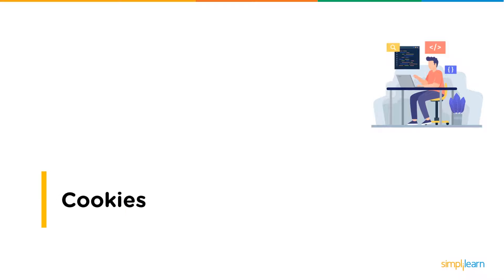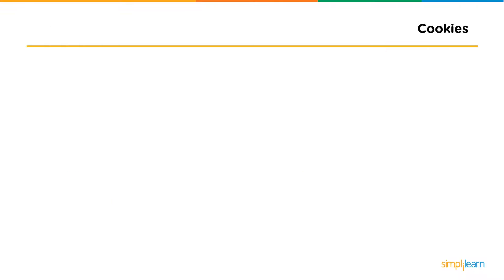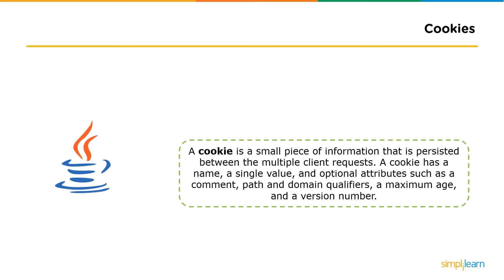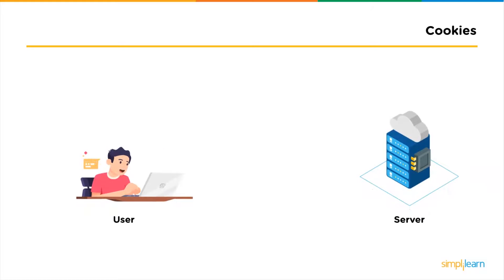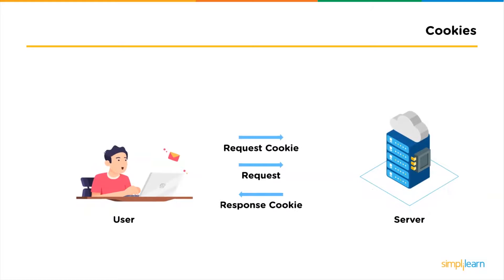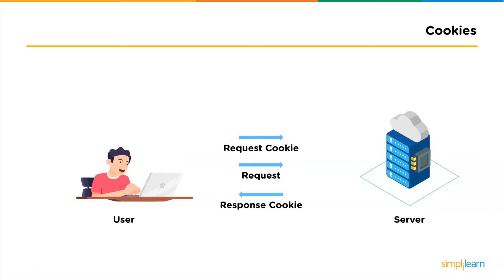After session tracking, we will enter into cookies. A cookie is a small piece of information that is persisted between multiple client requests. A cookie has a name, a single value, and optional attributes such as comment, path and domain qualifiers, a maximum age, and a version number. By default, each request is considered a new request. In the cookie technique, we add a cookie with a response from the server. The cookie is stored in the cache of a browser. After that, if a request is sent by the user, the cookie is added with the request by default. Thus, we recognize the user as an old user.